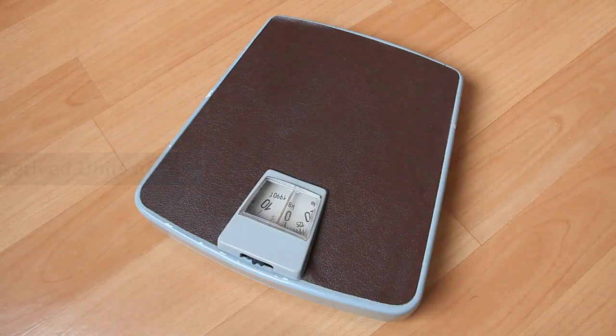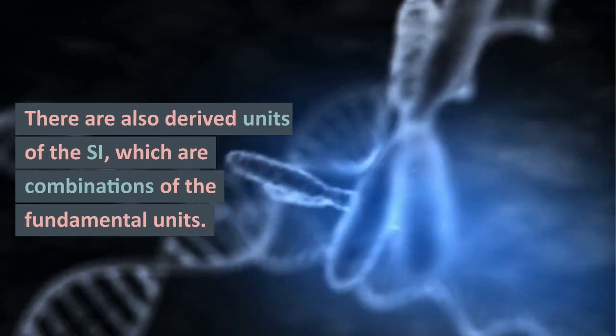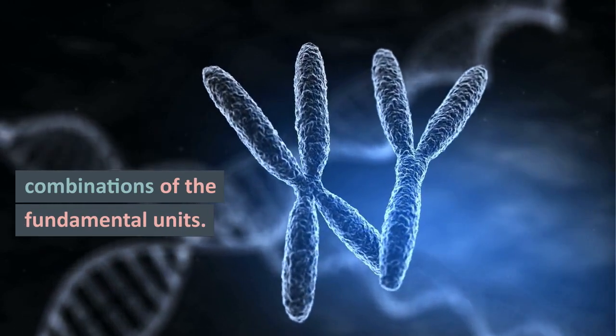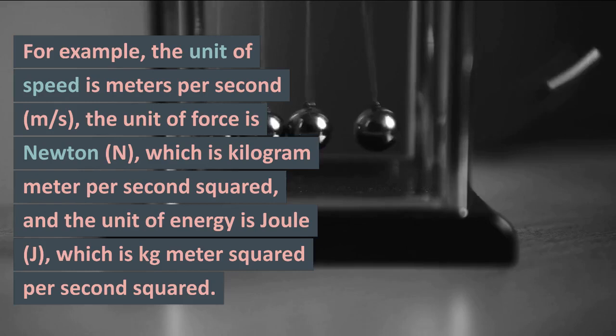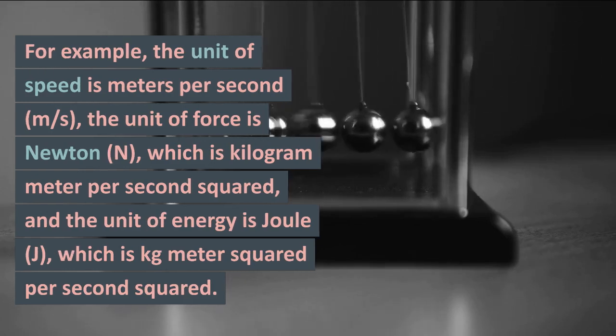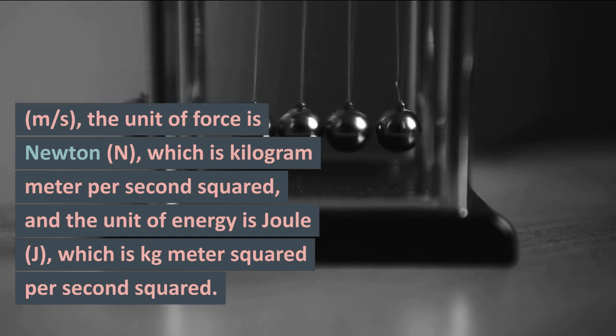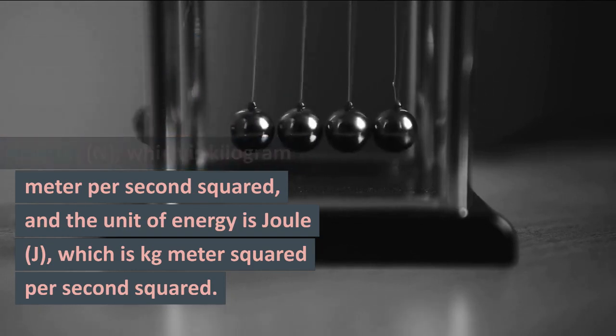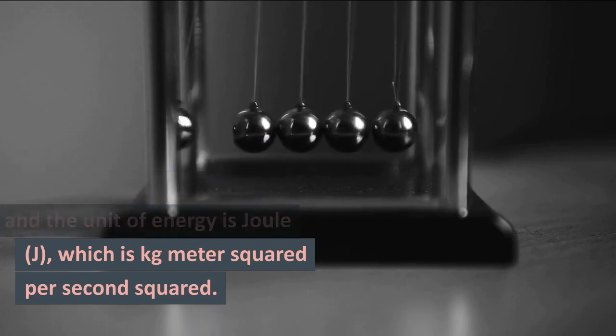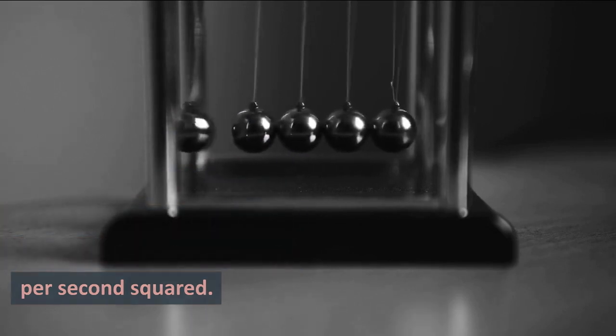Derived Units of SI. There are also derived units of the SI, which are combinations of the fundamental units. For example, the unit of speed is meters per second, the unit of force is newton (N), which is kilogram meter per second squared, and the unit of energy is joule (J), which is kilogram meter squared per second squared.